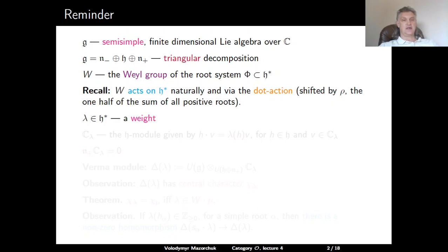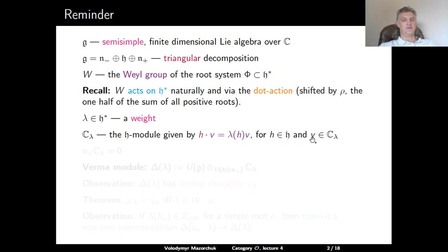Elements of H* are called weights. Fixing a weight λ, we can consider the corresponding one-dimensional H-module C_λ on which elements of H act via scalars prescribed by λ: H acts on C_λ as the scalar λ(H) times v for any H in H and any vector v. Every simple H-module has the form C_λ for some λ in H*. Setting N⁺·C_λ = 0 defines on C_λ the structure of a module over the Borel subalgebra H ⊕ N⁺.